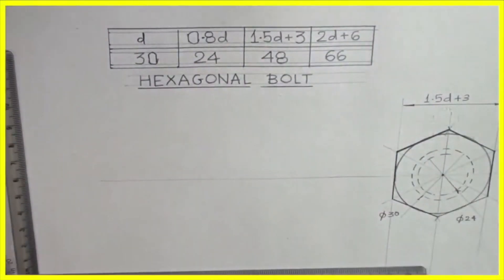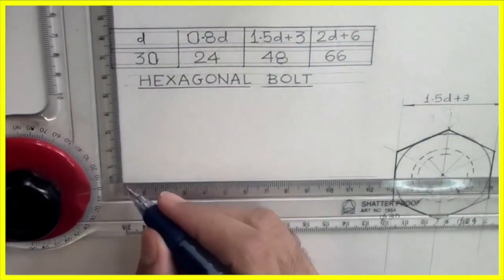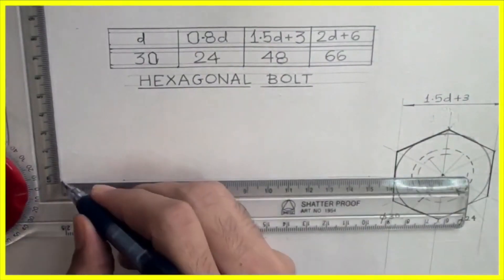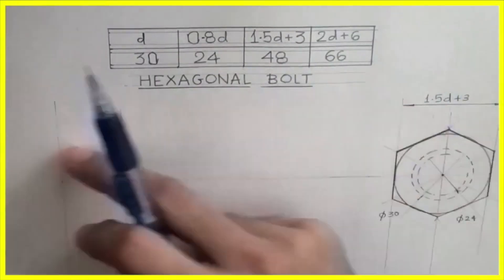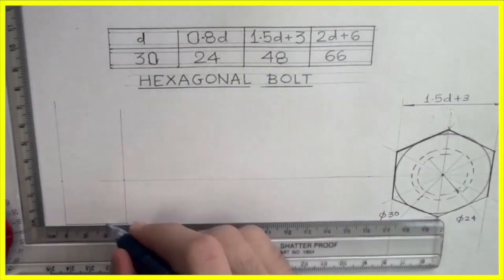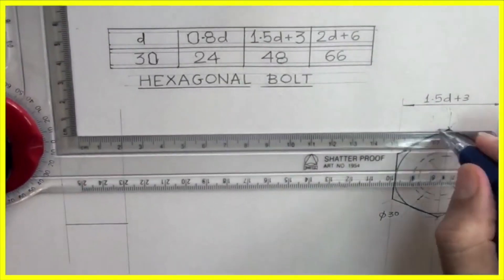Now I will draw front view. Shank length is 120, so I will take 120. Then I will take 30. I will draw vertical line and from here I will extend.